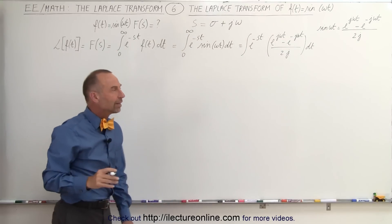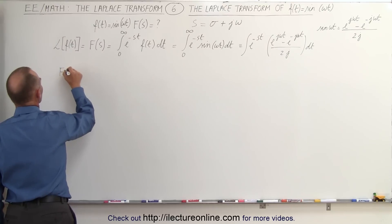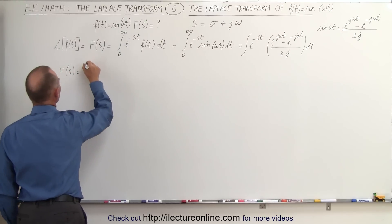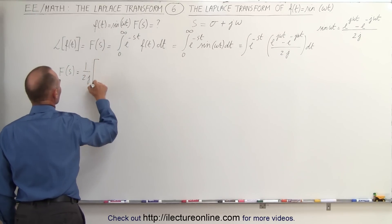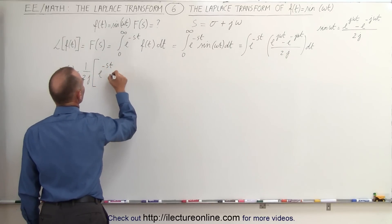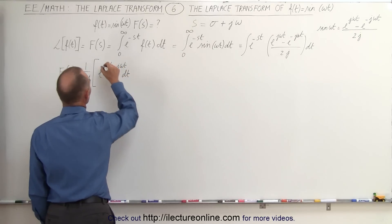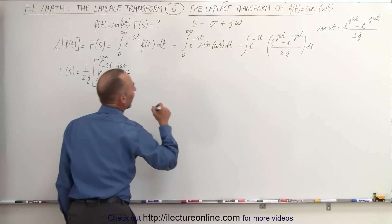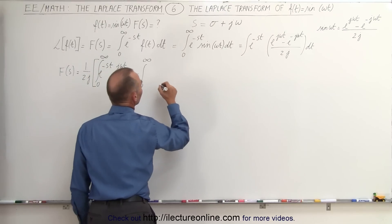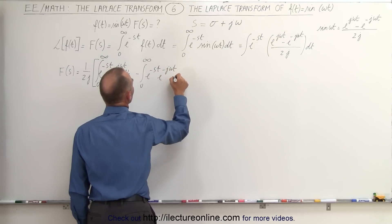We can write this as two separate integrals. F of s is equal to: first, we factor out a 1 over 2j — that will be applicable to all terms — times the first integral, which is the integral from 0 to infinity of e to the minus st times e to the j omega t dt. Then we subtract the integral from 0 to infinity of e to the minus st times e to the minus j omega t times dt.